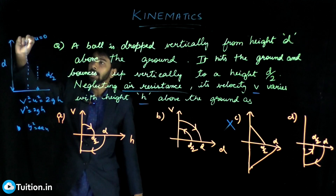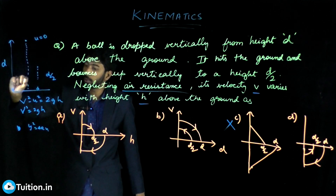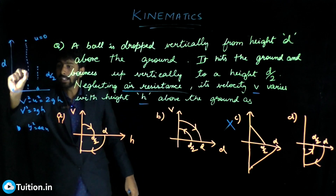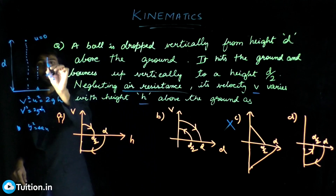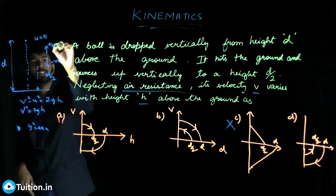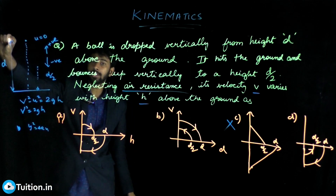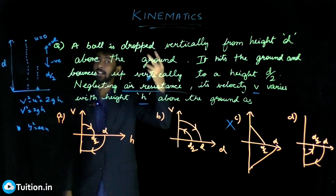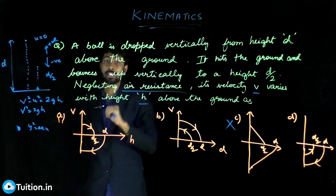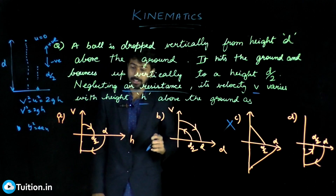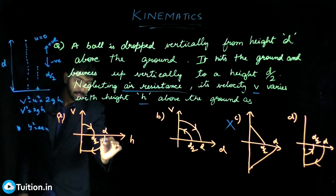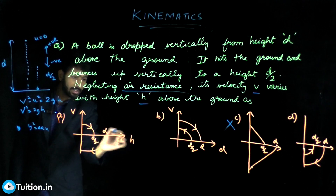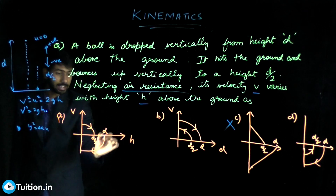When the ball comes down, due to gravity the velocity keeps increasing — but it increases in the negative direction, because I'm taking downward as negative and upward as positive. So when the ball is at height d, velocity is zero. As it falls from d to zero, the velocity is increasing in magnitude but in the negative direction.